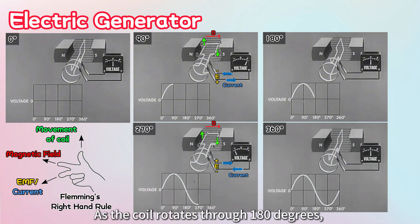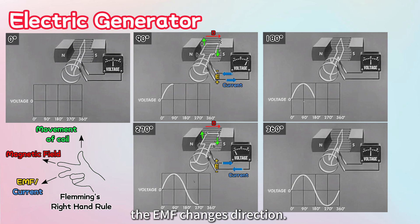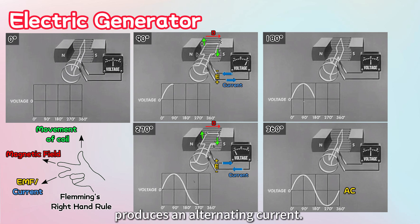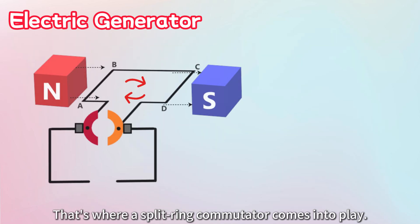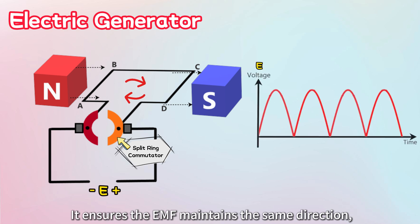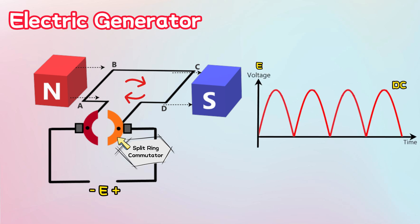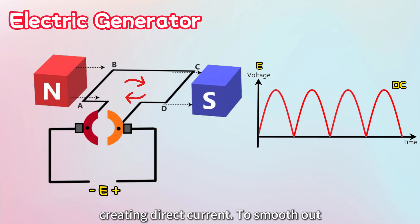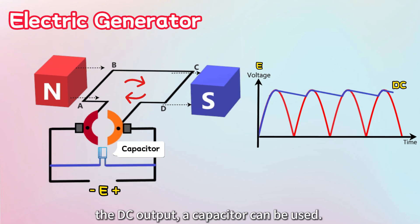As the coil rotates through 180 degrees, the EMF changes direction. This change in direction produces an alternating current. But what if we need DC power instead? That's where a split ring commutator comes into play — it ensures the EMF maintains the same direction, creating direct current. To smooth out the DC output, a capacitor can be used.